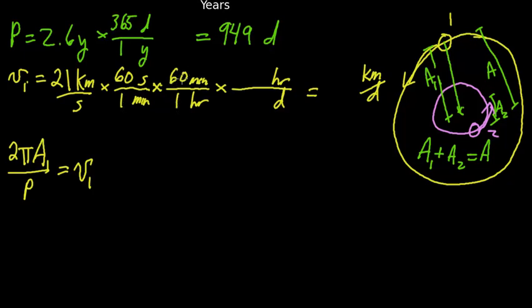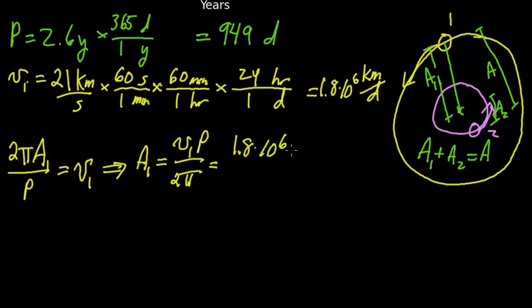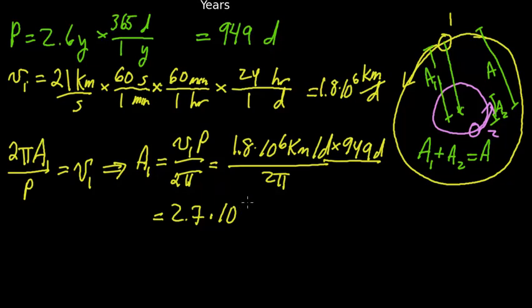Now I can go back and apply the number to the proper thing, 24 hours in one day. And this turns out to be about 1.8 times 10 to the sixth kilometers per day. So, this is the circumference divided by the period. This lets me write that A1 is equal to V1P over 2 pi, which now is 1.8 times 10 to the sixth kilometers per day, times 949 days, divided by 2 pi.